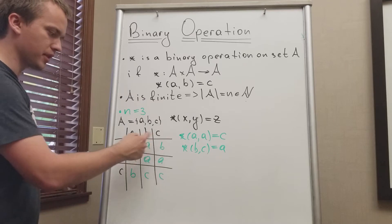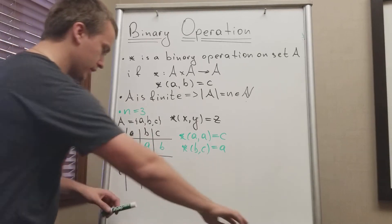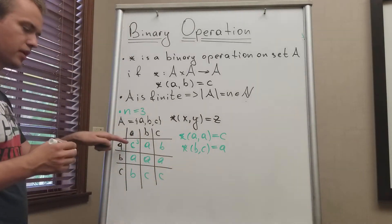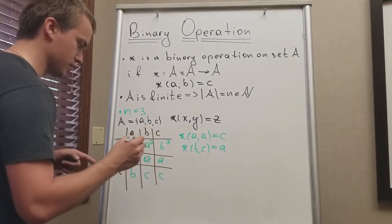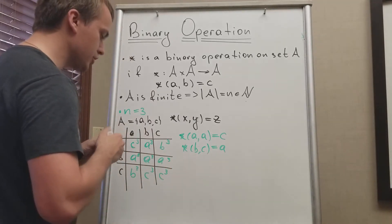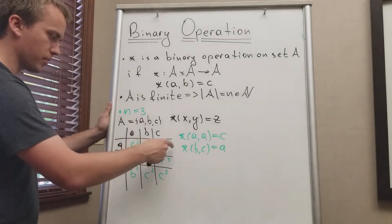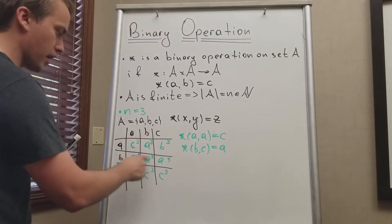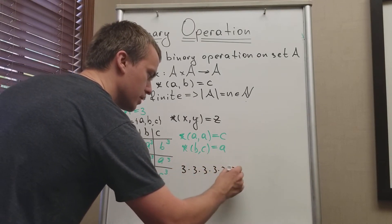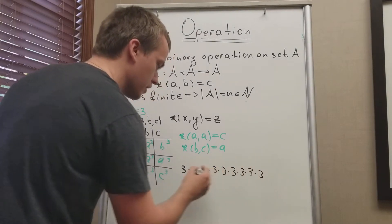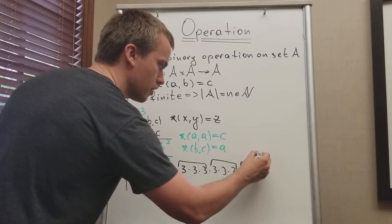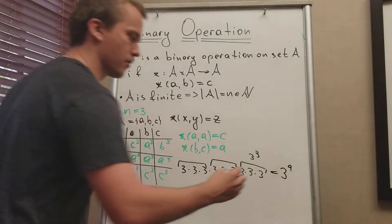If you want to ask how many combinations of these tables do we have, we can see that for each entry — for example this one — we have three choices: we can either put a, b, or c. For each of the nine entries we have three choices. By using the counting principle, when I multiply all my entries I will get three multiplied nine times. I can think about three blocks where each block is three to the third power, so in total I will have three to the ninth power binary operations.